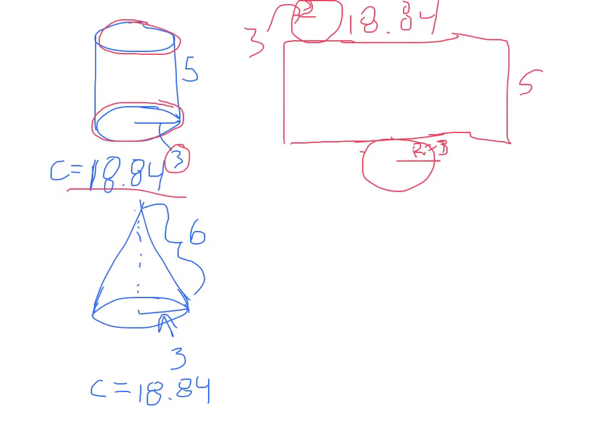Again, we found the circumference of the circle to be eighteen point eight four, just use the same example to keep numbers easy. That is the distance all the way around this. If you imagine, I don't know if you've ever seen those cone cups, but if you were to unfold that, it would look like a triangle and the slant height is six.